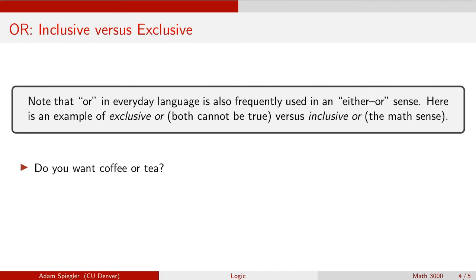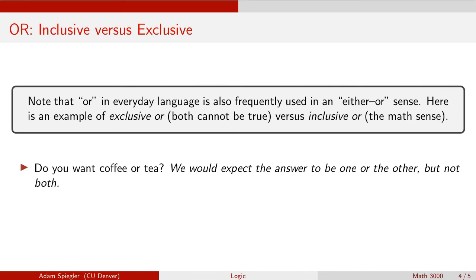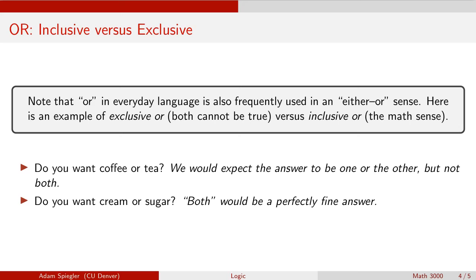To illustrate the difference: consider the question 'Do you want coffee or do you want tea?' This is an example of an exclusive or, because we wouldn't expect both to be true — you would either want coffee or you would want tea. On the other hand, 'Do you want cream or sugar?' could be an inclusive or, because both would be a perfectly acceptable answer — it's certainly possible that you want both cream and sugar.